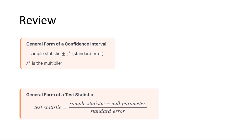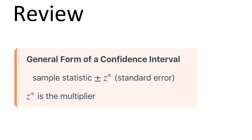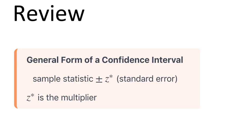Before we get started with new content, I want to review a couple of points. We saw both of these formulas last week in Lesson 7. The general form of a confidence interval is the sample statistic plus and minus the z multiplier times the standard error. This week, we are just working with one sample, so the sample statistic could be a sample proportion or a sample mean. The z multiplier comes from the z distribution. For a 95% confidence interval, the z multiplier would be the z value that separates the middle 95% from the outer 5%. The standard error in Lesson 7 we were taking from a bootstrapping distribution. This week, we will learn some formulas that we can use to compute the standard error mathematically.